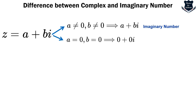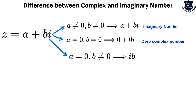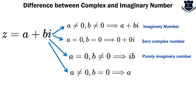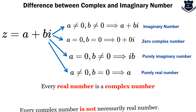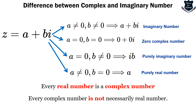If a = 0 and b = 0, we get 0+0i, which is the zero complex number. If a = 0 and b ≠ 0, we get bi, which is called a purely imaginary number. If a ≠ 0 and b = 0, we get a, which is purely a real number. From this we can conclude that every real number is a complex number, but every complex number is not necessarily a real number.